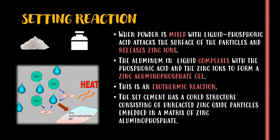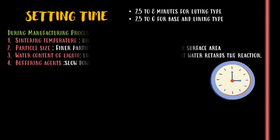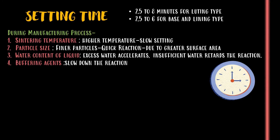The set cement has a core structure consisting of unreacted zinc oxide particles embedded in a matrix of zinc aluminum phosphate. The setting time of zinc phosphate cement is 2.5 to 8 minutes for luting type and 2.5 to 6 minutes for base and lining type.